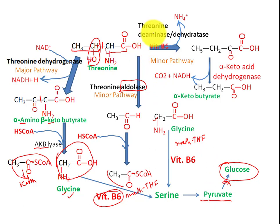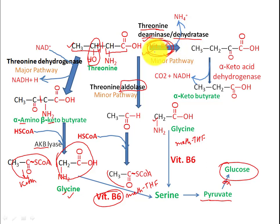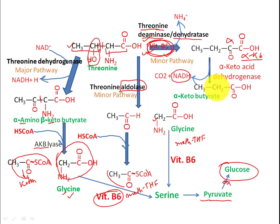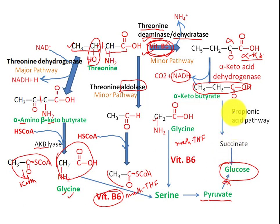Now for the third pathway: threonine undergoes non-oxidative deamination catalyzed by threonine deaminase (or dehydrogenase), requiring vitamin B6 — the same reaction type that serine undergoes. This directly produces alpha-ketobutyrate (a four-carbon keto compound). Alpha-ketobutyrate then converts into propionic acid, releasing CO2 and one NADH. Through the propionic acid pathway, it converts into succinate, and succinate then converts into glucose.